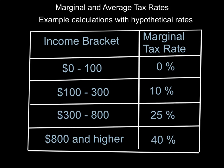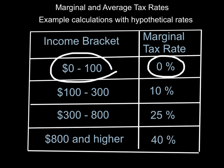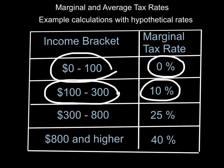If you look at the table here, you can see that a person earning between zero and a hundred dollars is going to pay zero percent. So if you earn ten dollars, fifty dollars, ninety-nine dollars, or a hundred dollars, you pay zero percent. Anybody earning over a hundred dollars is going to pay ten percent — but only on any amount that's greater than a hundred dollars. We're going to look at that in just a second with a calculation.